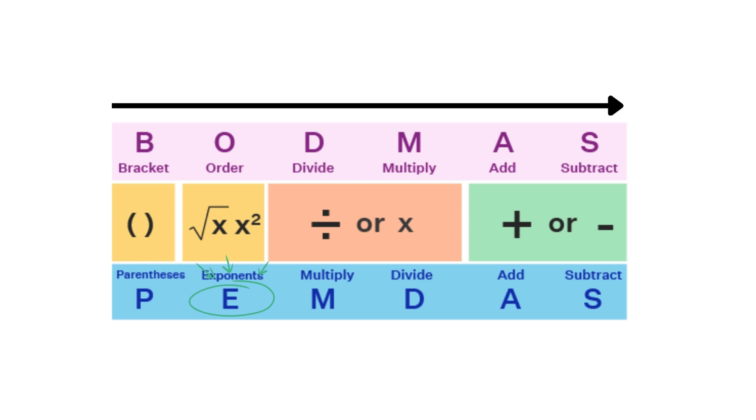Two, exponentiation comes next. Three, multiplication and division come afterward, with equal precedence. Four, addition and subtraction come after that, again, with equal precedence.